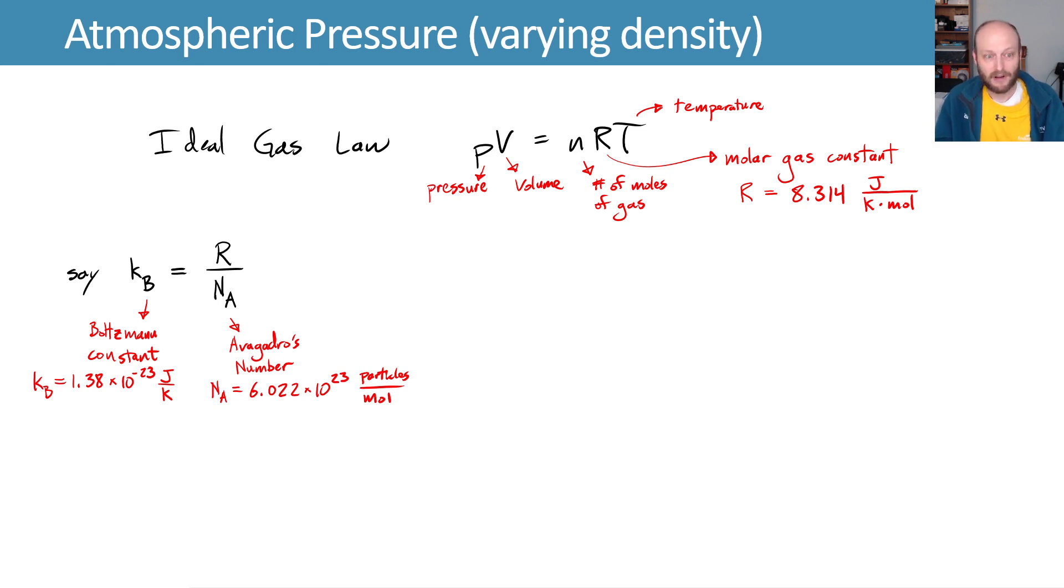I will tell you Avogadro's number is telling you the number of particles you have in a given mole of a substance. All we're using it for is to convert this ideal gas law into a slightly different form where we can say PV equals NkᵦT, where that big N now is the number of particles.